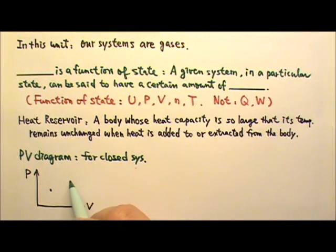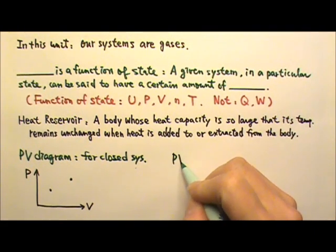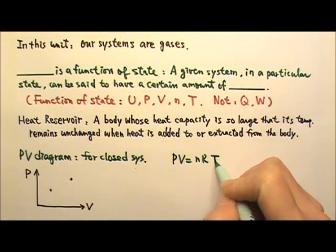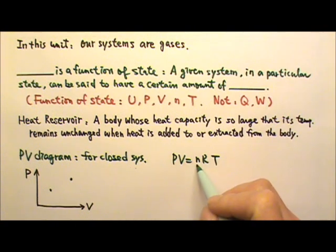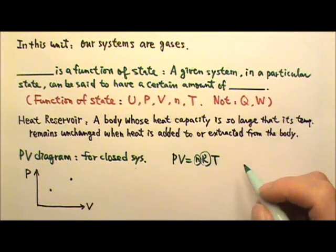Because PV equals nRT, for a closed system, the number of moles would be a constant. The gas constant R, of course, is a constant.